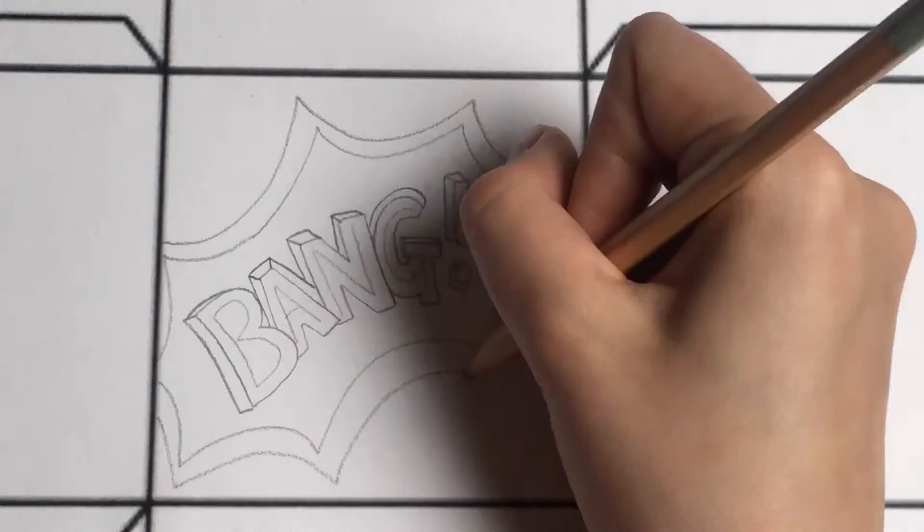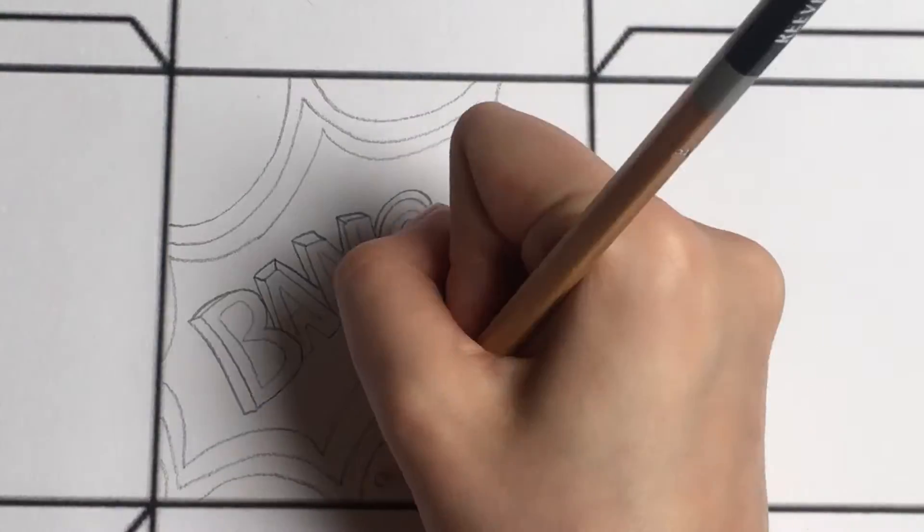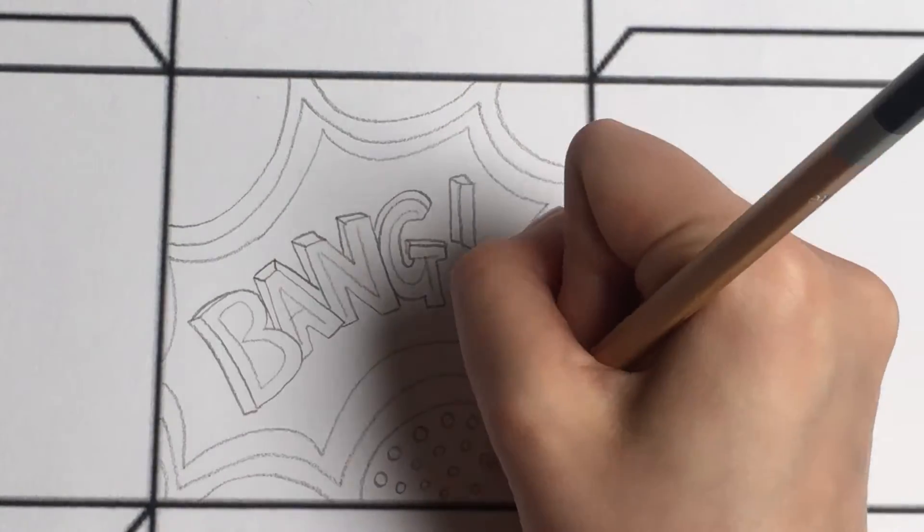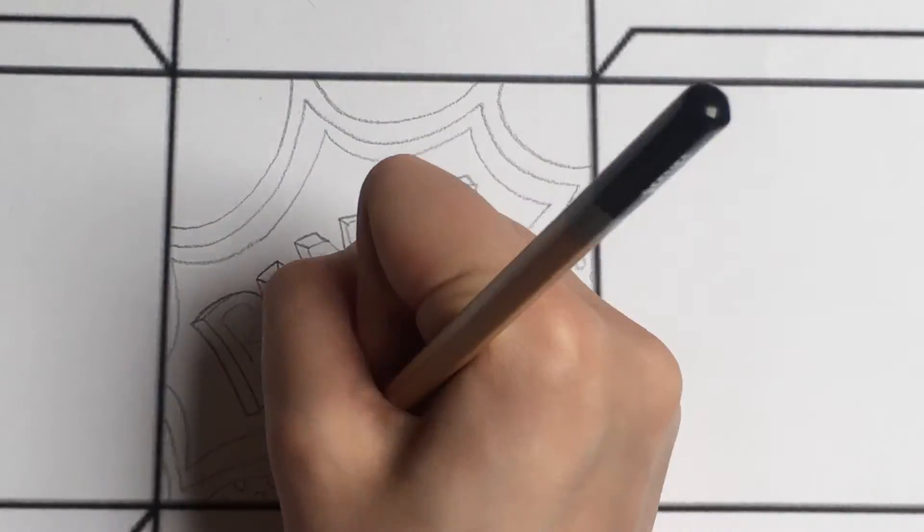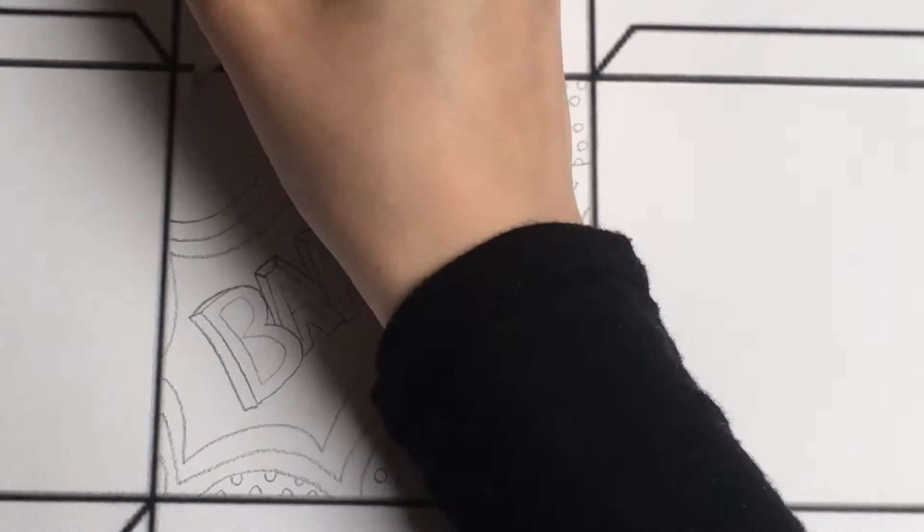When I'm adding an explosion, I just do curvy lines almost like a cobweb, and I do this three times. Then I start adding some circles around the edge, which is our famous pop art bendy dots, and I do this in all the white space. It's up to you what size you want to do them.